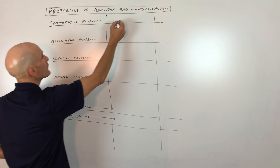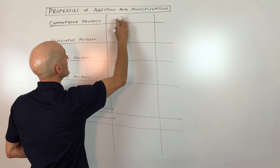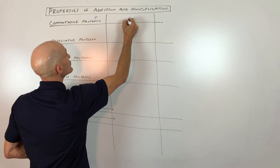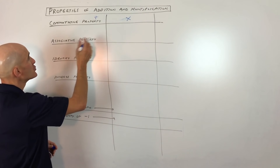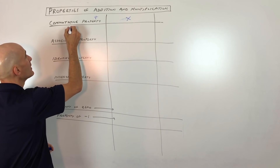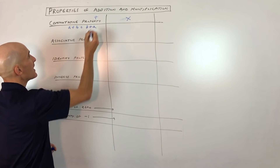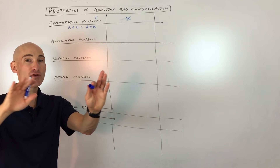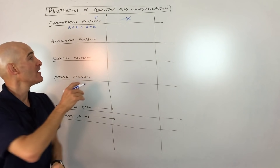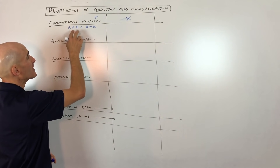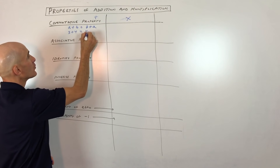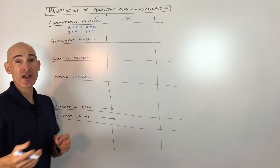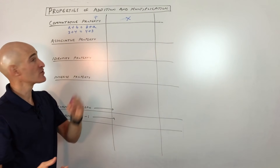I'll show you the property here. There's one for addition and one for multiplication — we'll do both. In your book, they would show you something like this: A plus B equals B plus A. You can see what they did is they commuted, or moved, the location of these two quantities. For example, 3 plus 4 equals 4 plus 3.